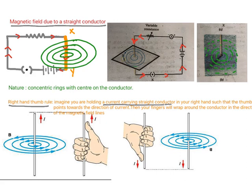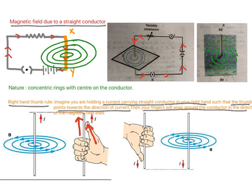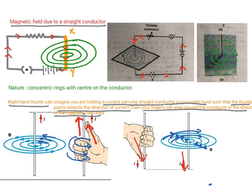To apply the Right Hand Thumb Rule, imagine you are holding a current-carrying conductor in your right hand such that the thumb points in the direction of the current. Then your fingers wrap around the conductor in the direction of the magnetic field. If the current is upward, the field lines are anticlockwise. If you reverse the direction of the current downward, the field lines reverse to the clockwise direction.